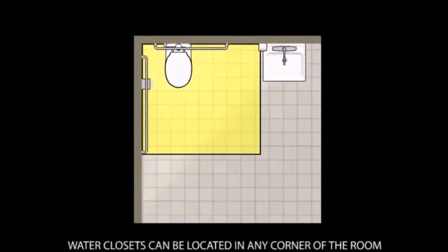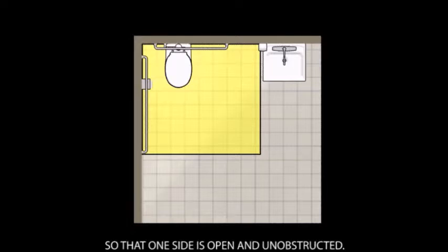Water closets can be located in any corner of the room so that one side is open and unobstructed.